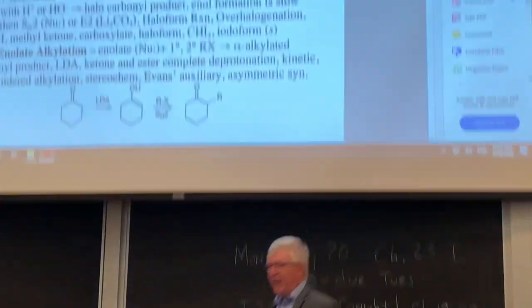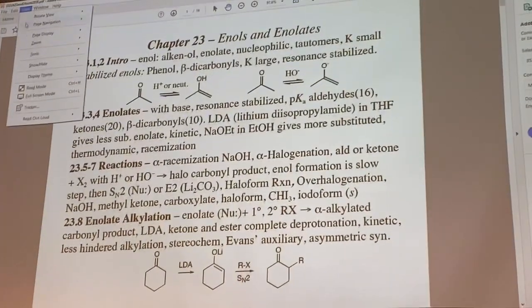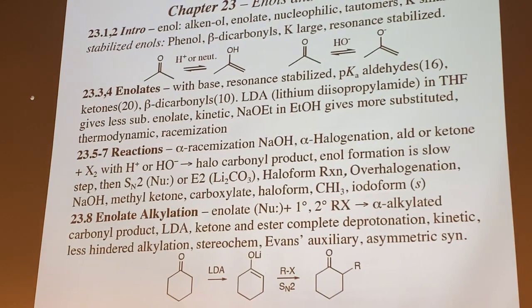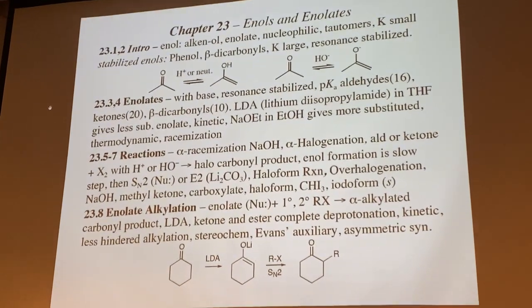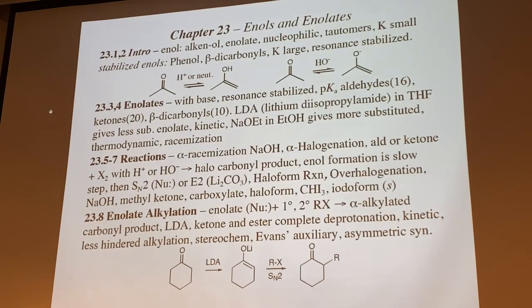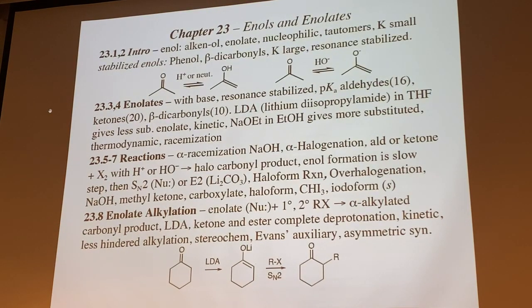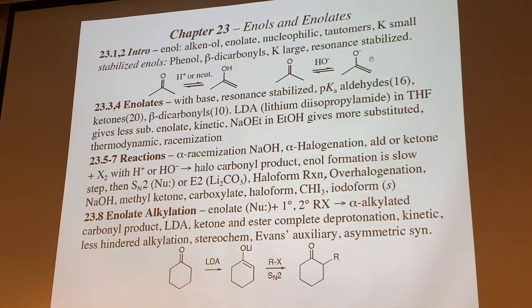Let's go to the Chapter 23 outline. The topic is enols and enolates — we've mentioned both before, and this is a shift in reactivity. So far, we've looked at carbonyls as electrophiles undergoing nucleophilic attack. Now we're going to convert the carbonyl into a nucleophile — either an enol under neutral or acidic conditions, or an enolate with base treatment. These are generally reversible conditions with hydroxide.